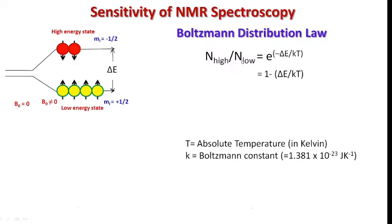To increase the number of nuclei in the low energy state, this factor must be less than 1 and more than 0. So this can be improved by either increasing the ΔE or by decreasing this factor kT.